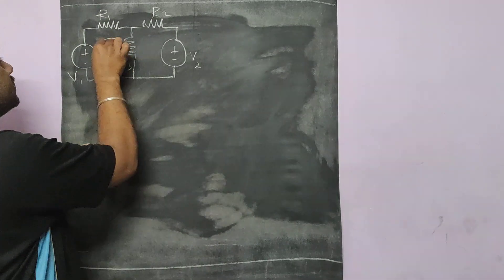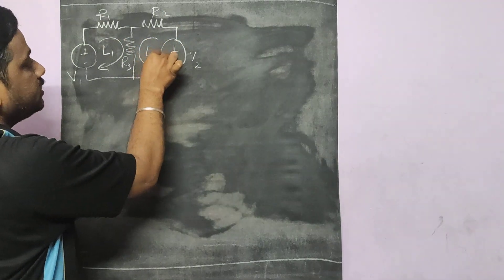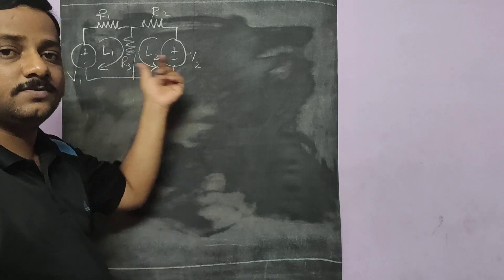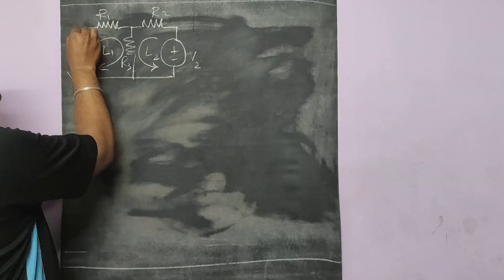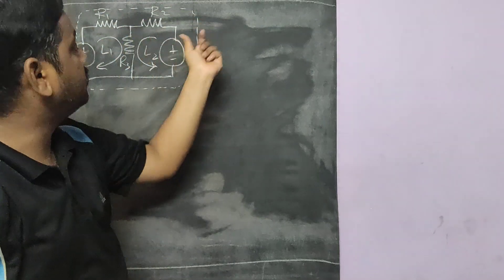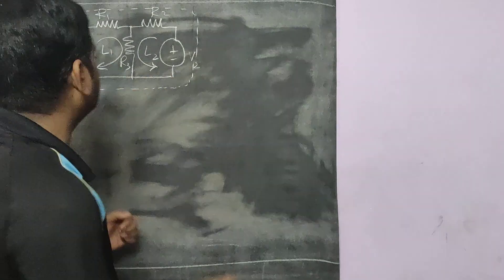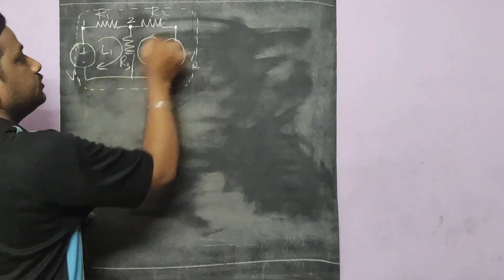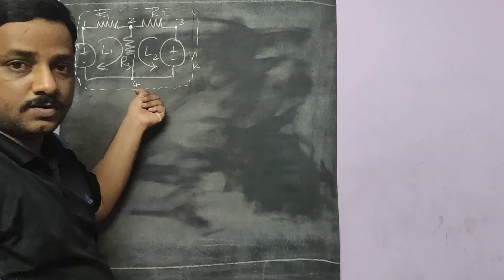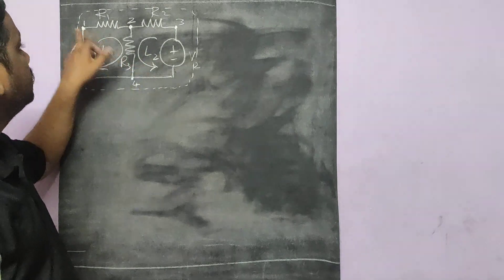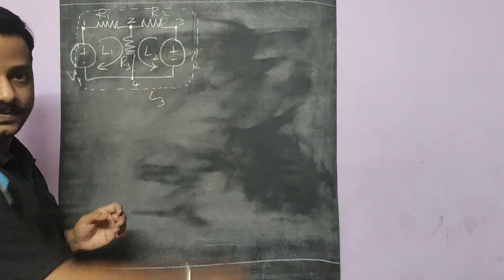In this circuit, the number of loops I can represent: loop L1, loop L2 — there is no restriction on directions in a loop. And there is a third loop L3, represented in dotted lines. The number of nodes in this circuit: node 1, node 2, node 3, node 4, and the reference node. So we have 4 nodes totally, and 3 loops: L1, L2, and L3.